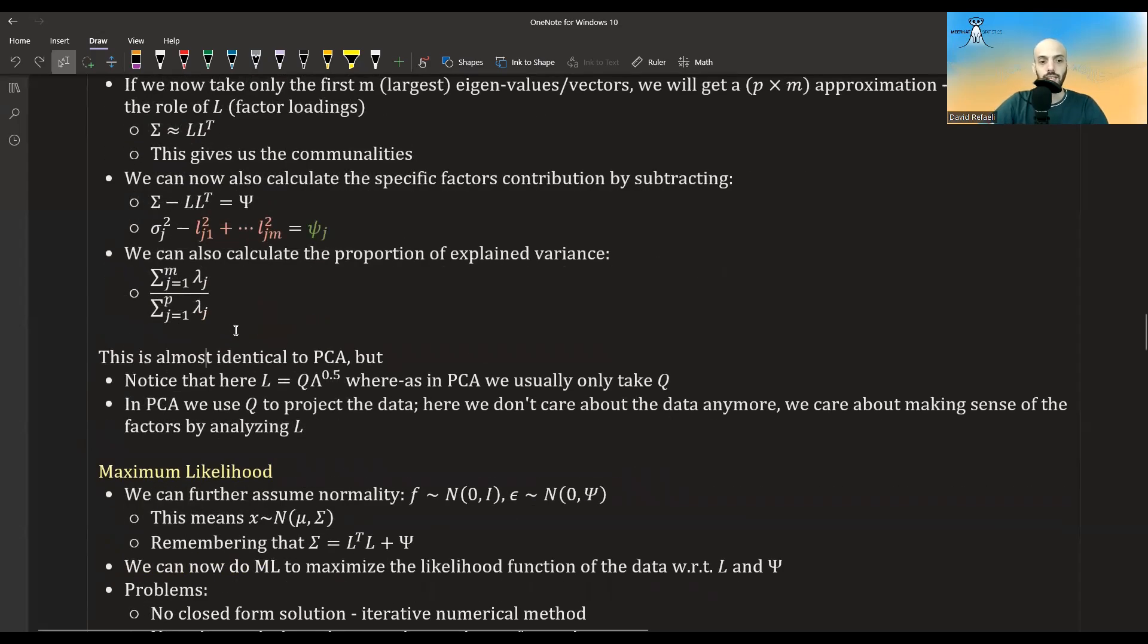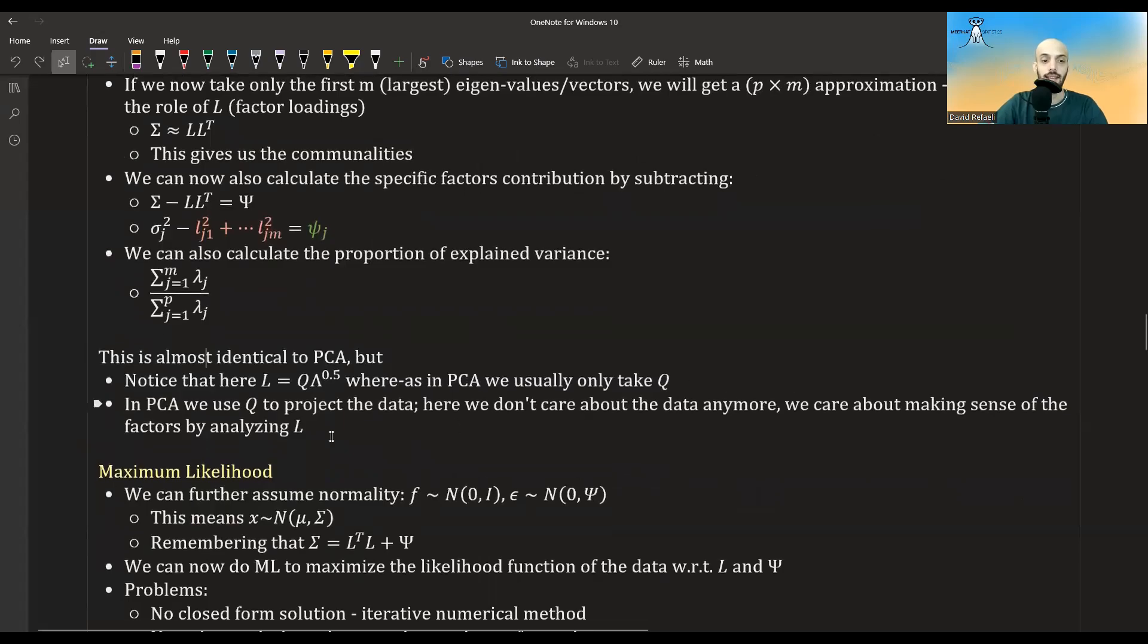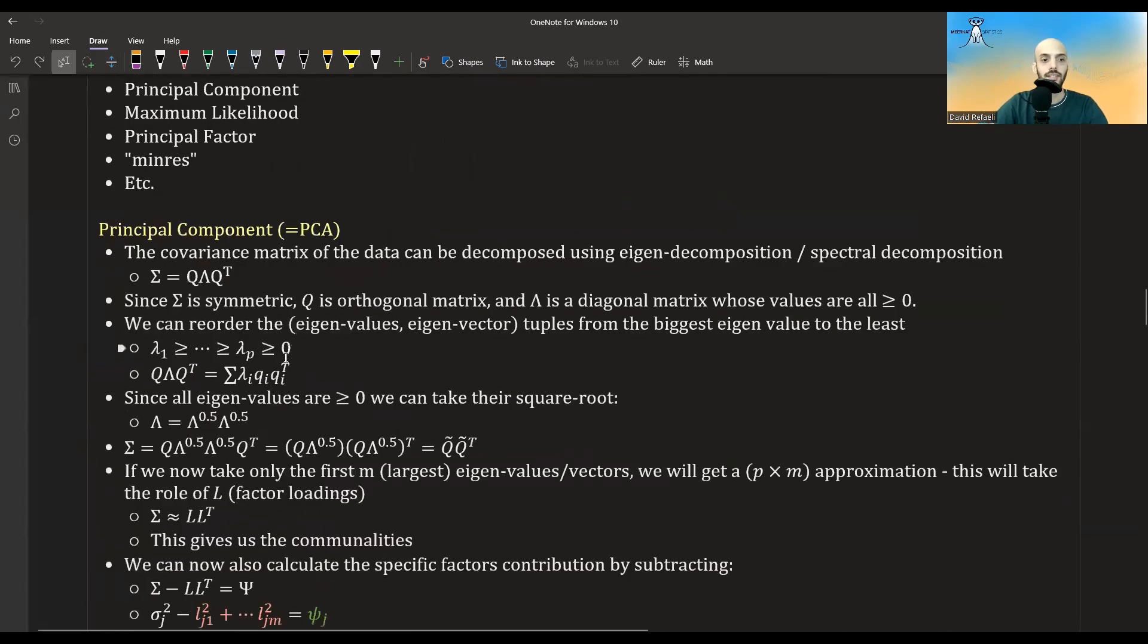And notice that this is almost identical to PCA, but in PCA, we only take the Q matrix usually, and we project the data using the Q matrix. Here we take Q times the square root of lambda. Also in PCA, we take Q to project the data. Here we don't care so much about the data. Here we care more about analyzing the L matrix and making sense of the factors. So what are these factors? So this was one method, the PCA method.